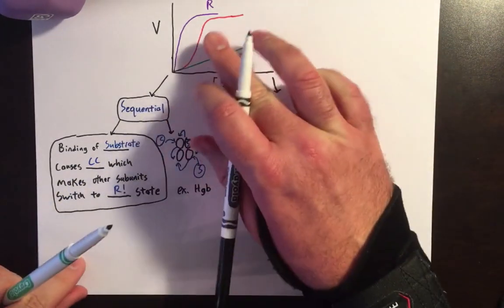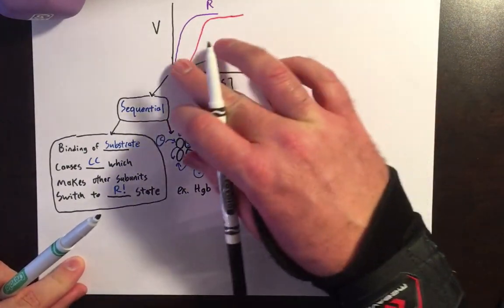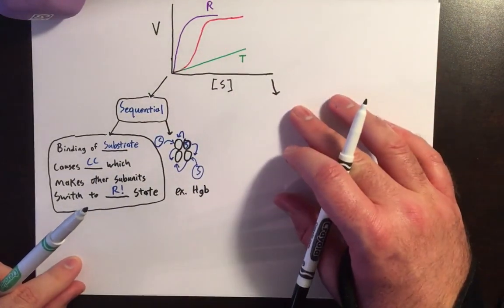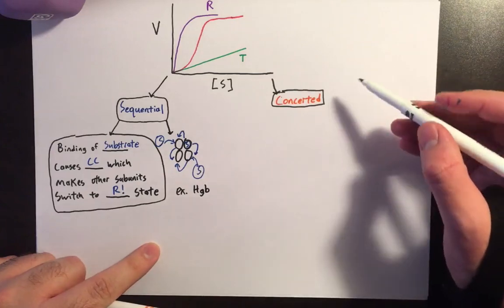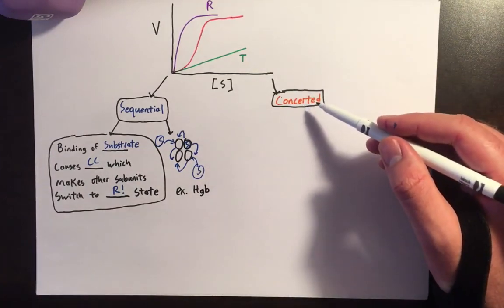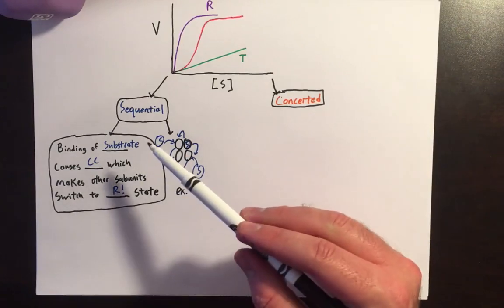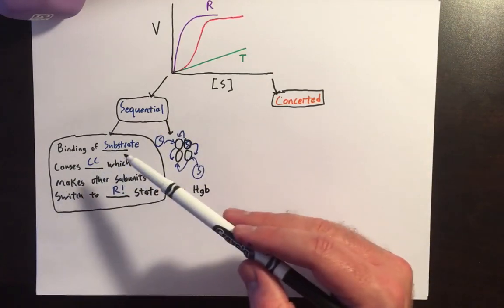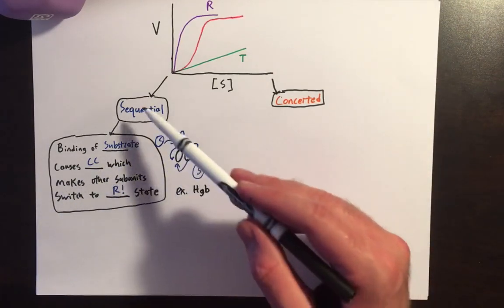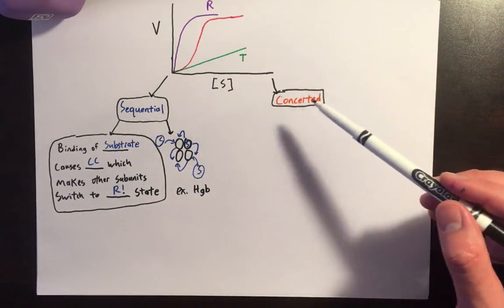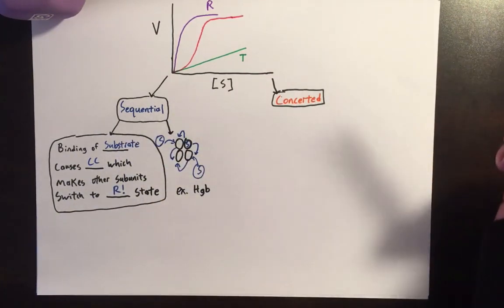The other model that equally accounts for this sigmoidal curve is called the concerted model. To be honest with you, I don't actually like the concerted model because it's not as mechanistic as the sequential model. We understand the sequential model in the context of conformational changes. This is much more of an explanation, whereas the concerted model is really more just a description.